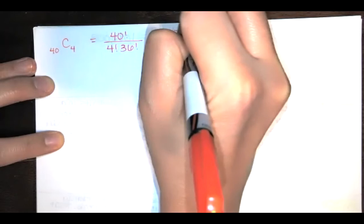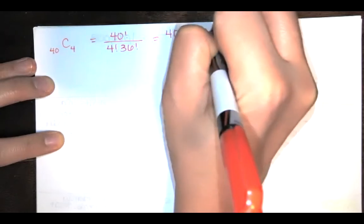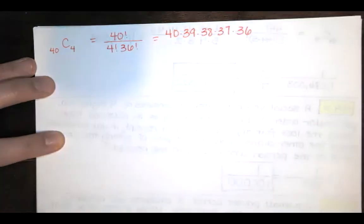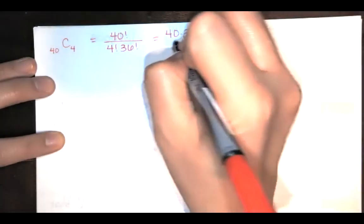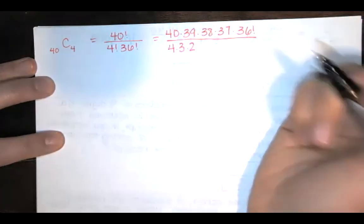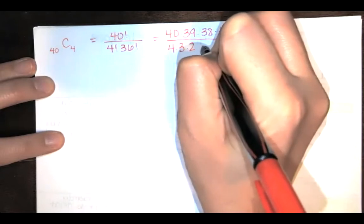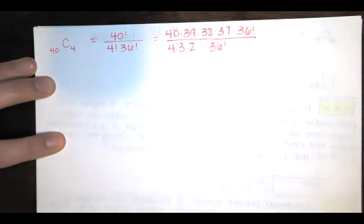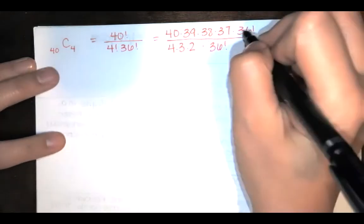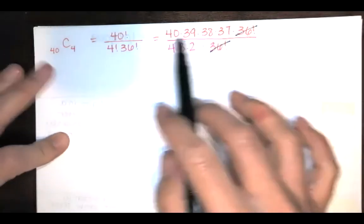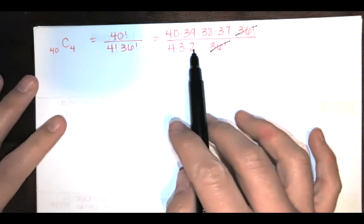And we can simplify that. This is 40 times 39 times 38 times 37 times 36 factorial, all divided by four factorial, so that's 4 times 3 times 2 times 1, multiplied by 36 factorial. This 36 factorial in the numerator reduces with that 36 factorial in the denominator. I'm going to just end up with this product over this right here.